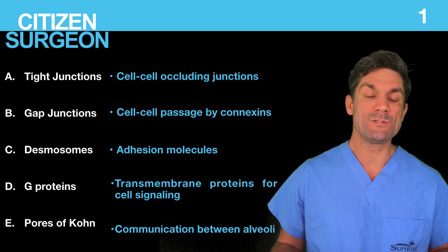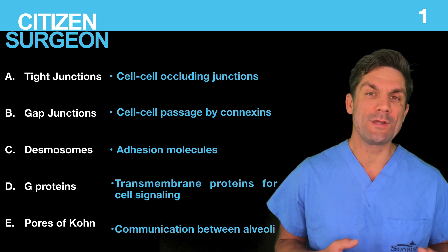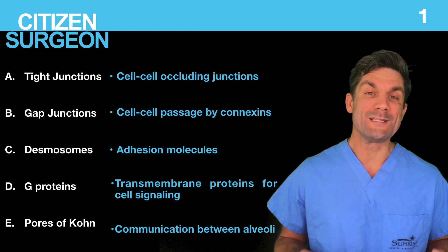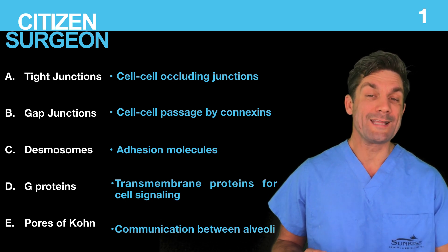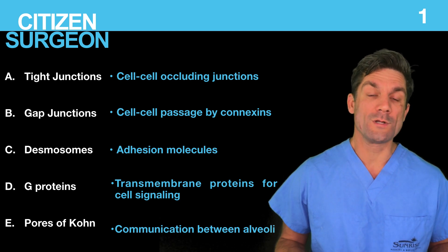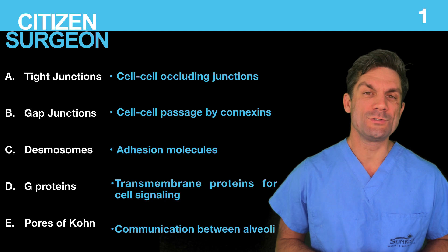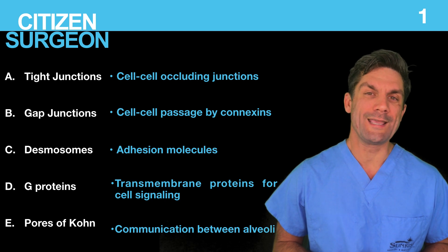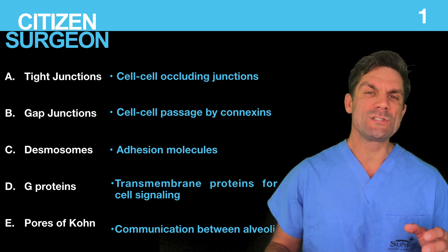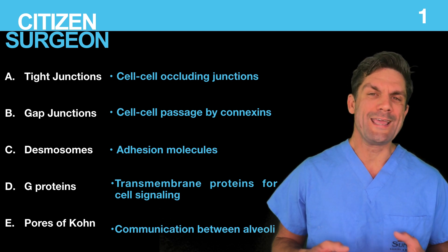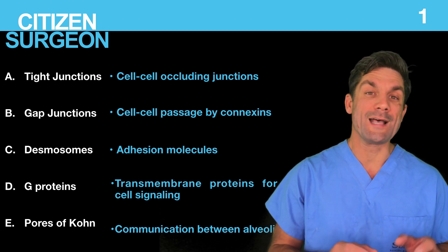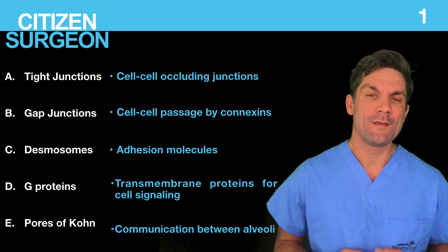Gap junctions are the communication between cells. Desmosomes are adhesion molecules. G proteins are used for intracellular signaling. And the pores of Kohn are small communication channels in the lung where air can pass from one alveolus to another.